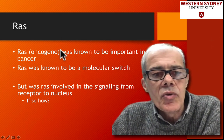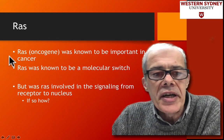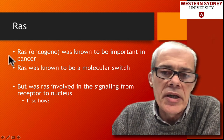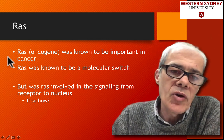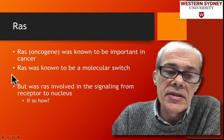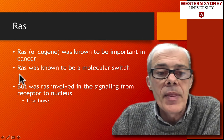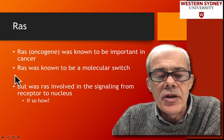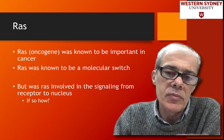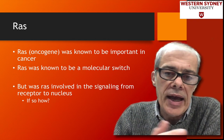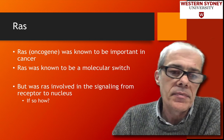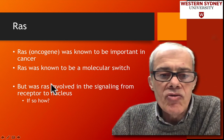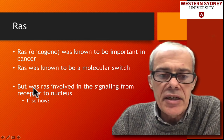RAS was known to be an oncogene, meaning its hyperactivation was important in cancer, and it was often identified from cancer samples and tumor samples. RAS was also known to be a molecular switch — it can activate other things. But the question is, how was RAS involved in signaling to the nucleus?